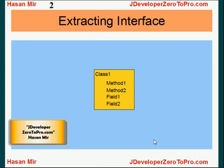So on the screen you're looking at a class. Let's say we have a class created in JDeveloper — let's call it Class 1. Classes have methods and fields. So let's say this class has two methods, Method 1 and Method 2, and two fields, Field 1 and Field 2.